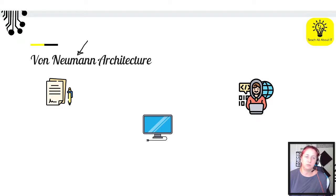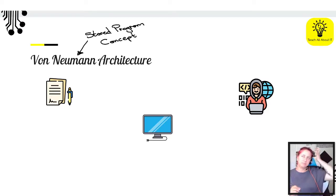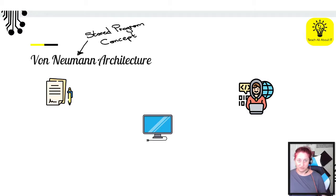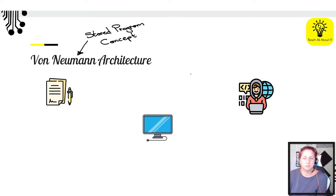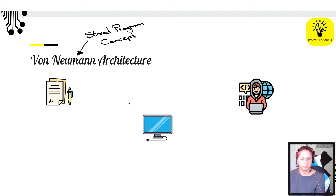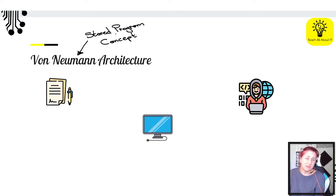We start off with this idea of a stored program concept. Von Neumann — John von Neumann — came up with this idea. Think about the way that is written: stored program. What do you think that actually means? Think about the way your computer is running instructions — where do those instructions come from? See if you can pop something into the chat to explain what a stored program concept is.